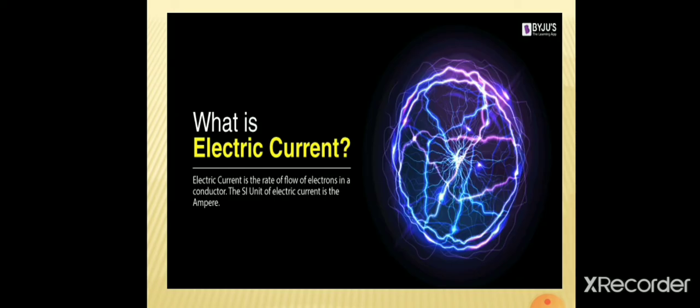Initially we must understand what is electric current. We know electric current is the rate of flow of electrons in a conductor. The SI unit of electric current is ampere.